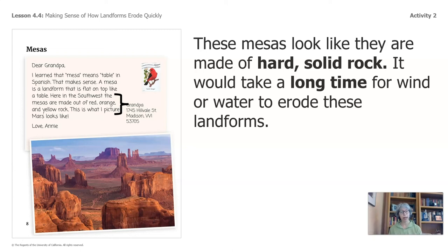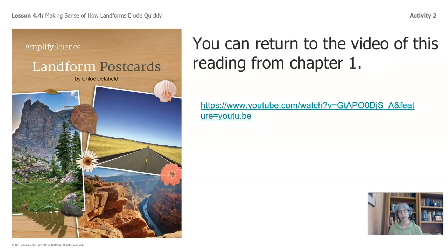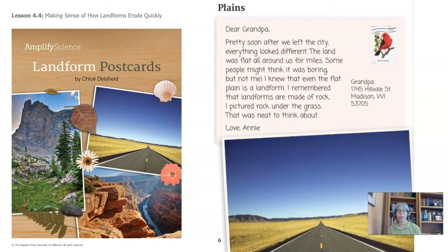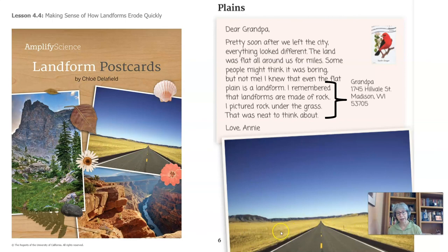Let's look for other examples. Go ahead and pause the video and find some for yourself. You can return to the reading video from chapter one by selecting the YouTube link. Some of you landed on page six — the plains. Annie writes, 'I remembered that landforms are made of rock. I pictured rock under the grass in the plains.' So if there's rock under all of this flatness, would that rock be eroding quickly or slowly?